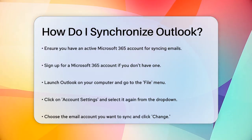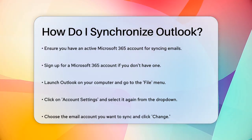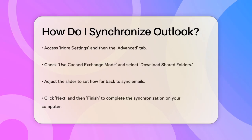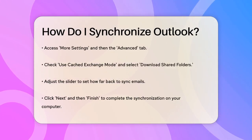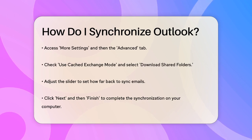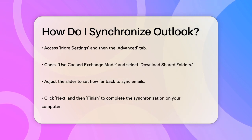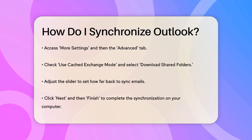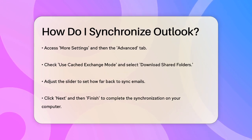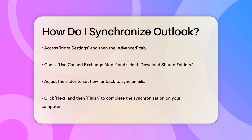To sync your Outlook email on your computer, start by launching Outlook and selecting the File menu at the top. From there, click on Account Settings and then select Account Settings again from the drop-down menu. You'll see a list of your email accounts. Select the one you want to sync and choose Change. Go to More Settings, then the Advanced tab and check the box that says Use Cached Exchange Mode.